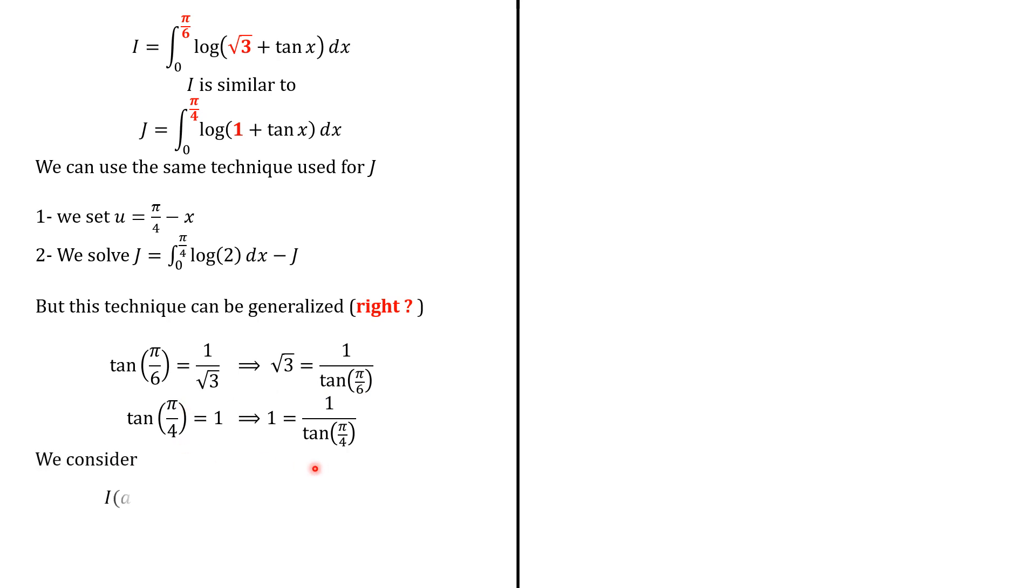So we can now focus on i of a, which is the integral from 0 to a of log of 1 over tangent of a plus tangent of x dx. We set this substitution, t equals the upper limit a minus x, so that dx is minus dt.